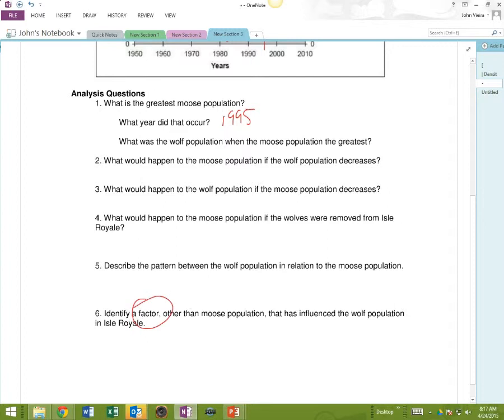Identify a factor from those six factors, other than moose population, that would influence wolf population on Isle Royale. Just come up with any other factor that might influence the population of wolves besides their food source. Besides competing with food. There are six factors. Can anybody come up with another factor that would affect the population of wolves besides their food source? Disease. Good. Human activity affecting their habitat. There are many other factors besides lack of food.